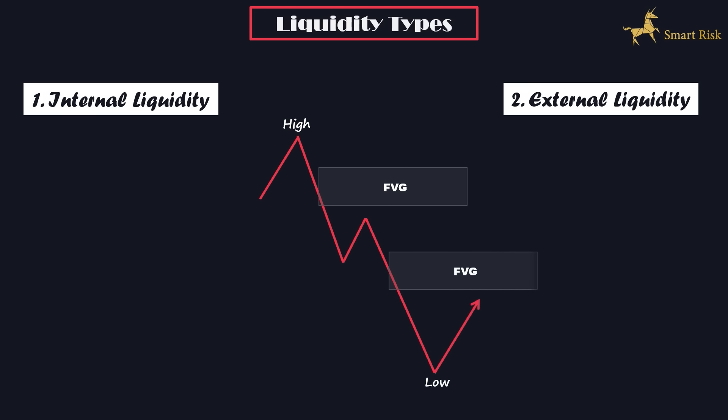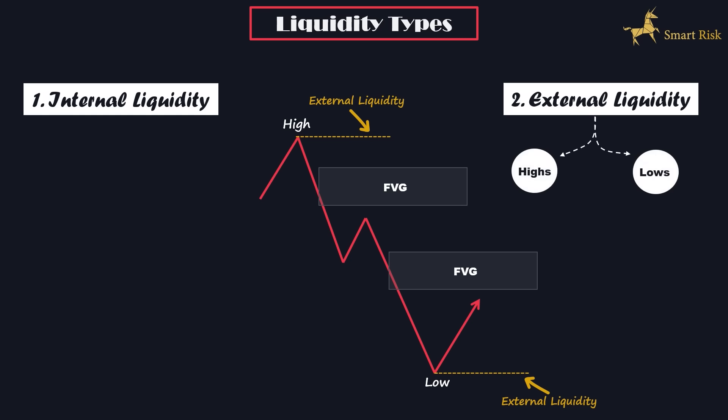To better comprehend this, let's imagine a market structure like a rally wave, consisting of a high and a low. These highs and lows represent external liquidity — essentially, external liquidity pertains to the highs and lows within a rally wave. On the other hand, the fair value gaps found within the range of the high and low are considered internal liquidity. It's important to note that when zooming in on a lower time frame, you'll encounter numerous internal highs and lows along with various market structures. However, upon shifting to a higher time frame, all of these elements would be perceived as fair value gaps.